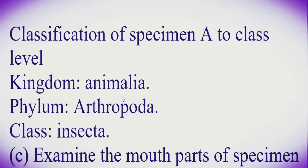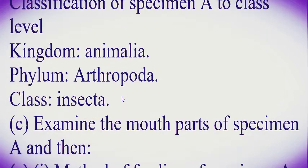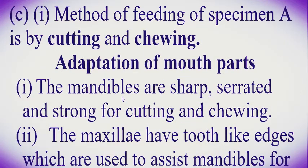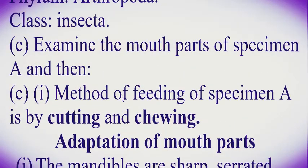Question number two: classify Specimen A to the class level. You are supposed to answer this question by considering from the highest rank of classification to the lowest. The Kingdom of Specimen A is Animalia, the Phylum is Arthropoda, and the Class is Insecta.